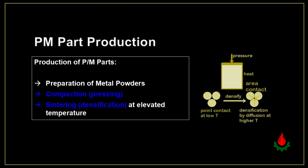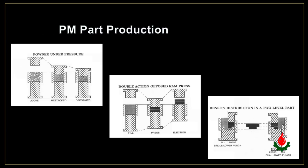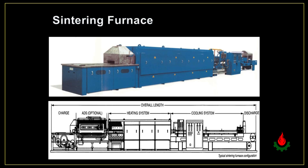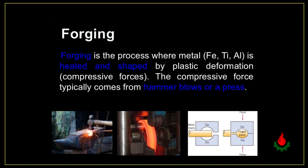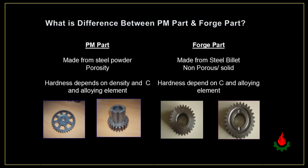PM part production involves a sintering furnace as a key stage. Forging is the process where metal — such as iron, steel, titanium, or aluminum — is heated and shaped by plastic deformation. The compressive force typically comes from hammer blows or a press.